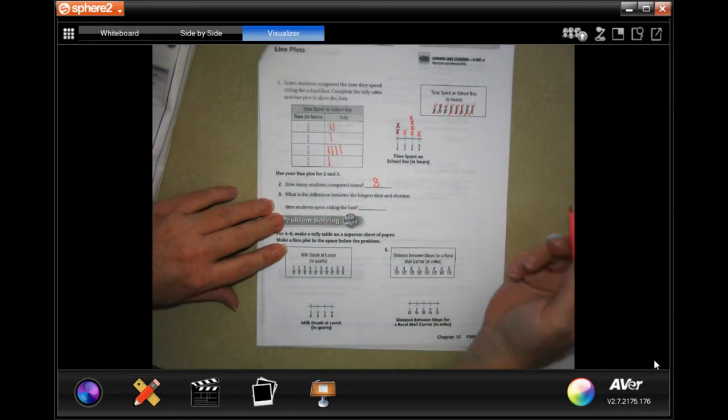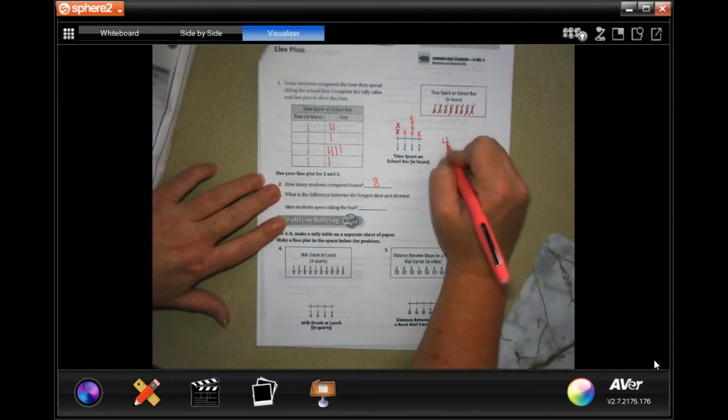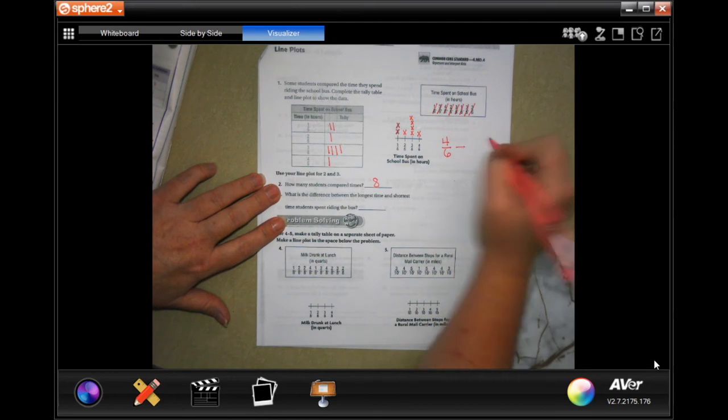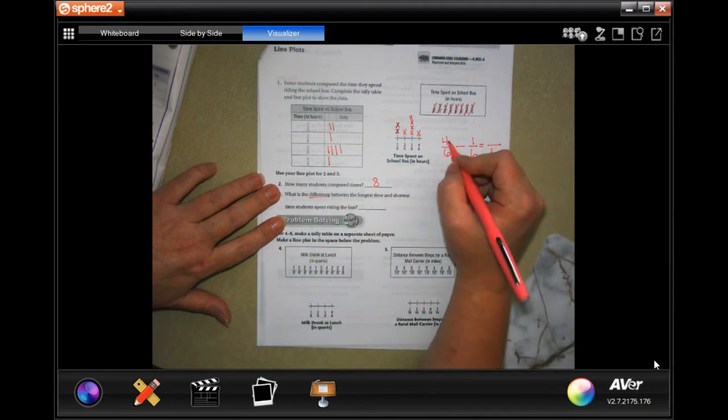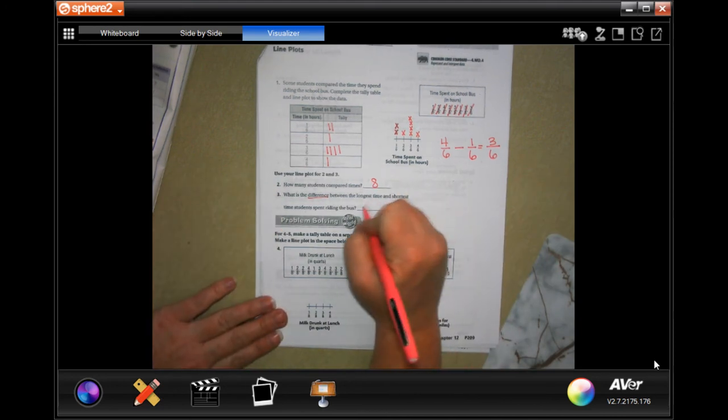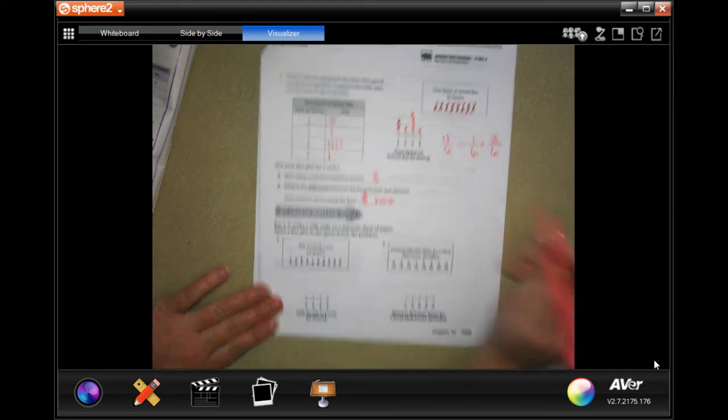Well, some of them spent four-sixths of an hour and some of them spent one-sixth of an hour. To find the difference we subtract, so four minus one equals three. Three-sixths of an hour.